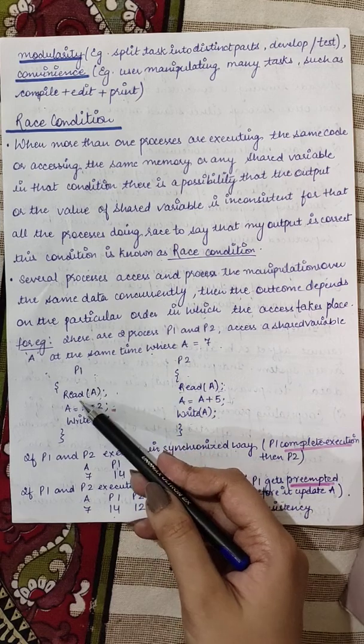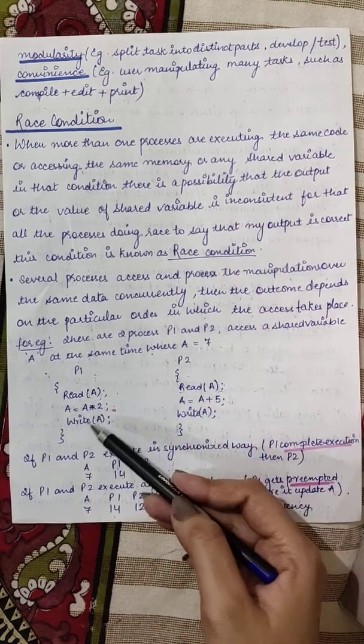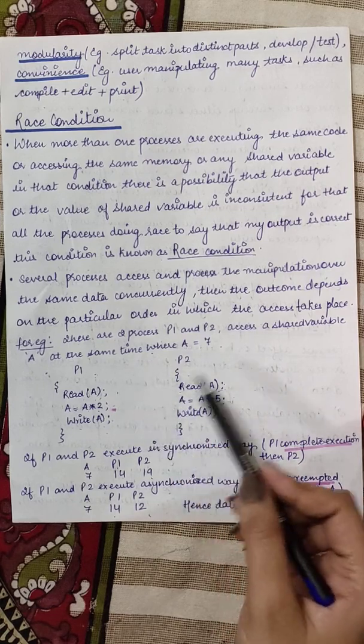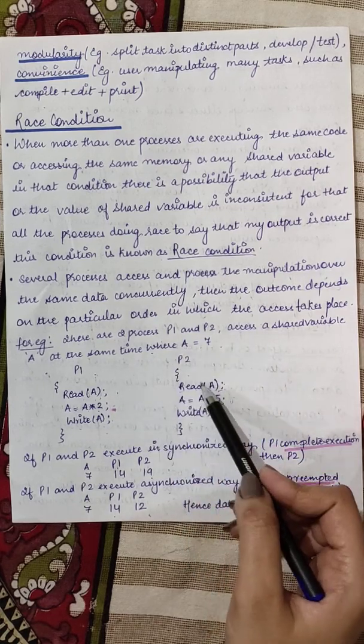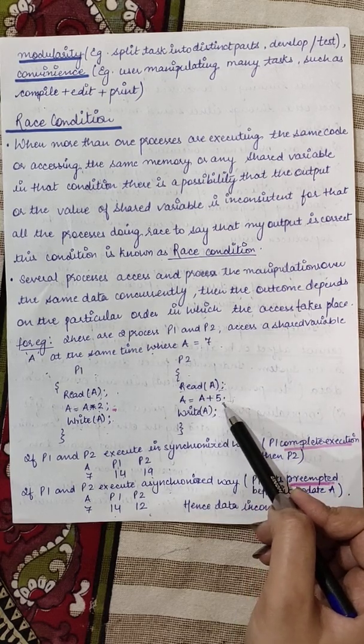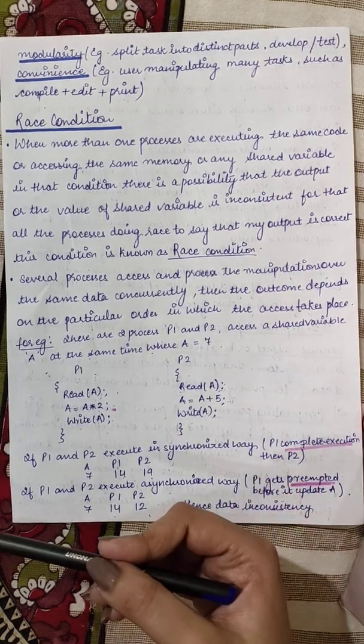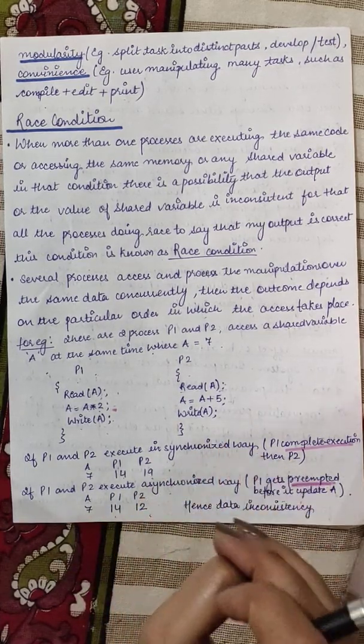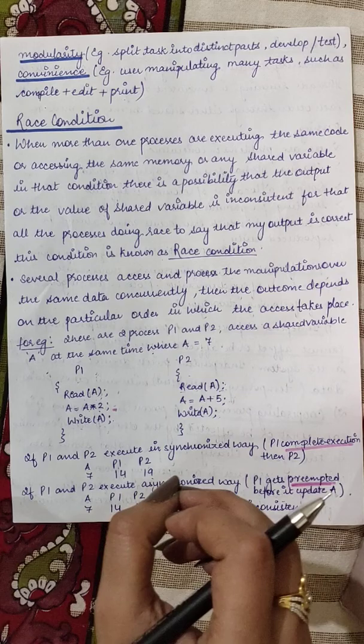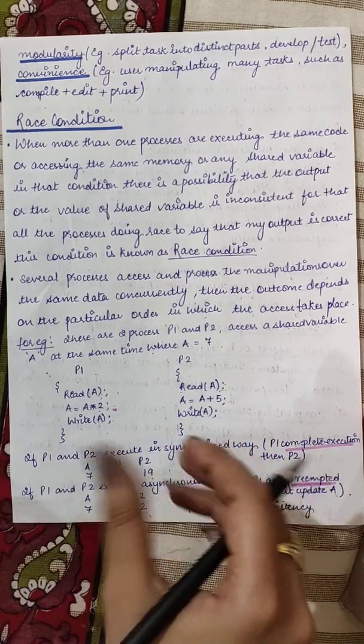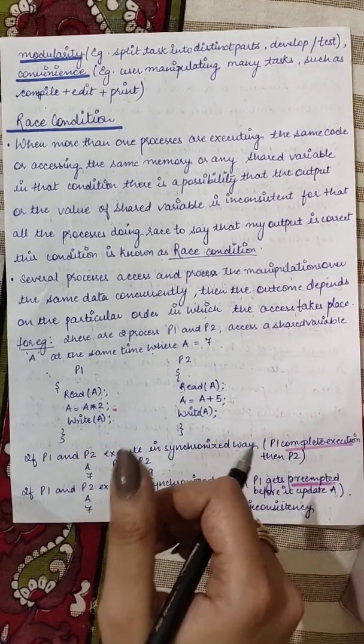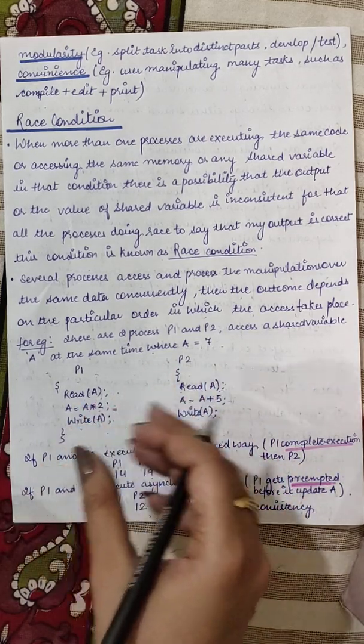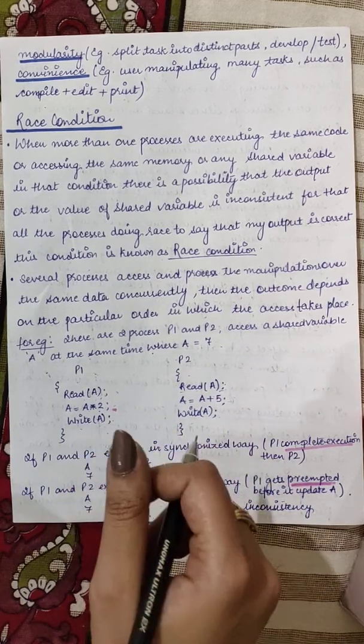To hume koi dikkat nahi hogi. Thik hai kya hua - P1 ne pahle read karaya jaise first example ko solve kiya hua hai. P1 ne read karaya, value of a is 7, 7 into 2 = 14 and usse update kera de. Ab a ki value kitni hai? 14. P2 baad mein aata hai, a ki value ko read karayega, 14 milegi, 14 plus 5 = 19 ho jayega aur 19 value update kera deta hai. Ab hum yeh dekhte hai ki abhi to yeh sidhe sidhe tarike se chal raha tha, koi chhedchaad nahi kar rahi. Hamne bhi P1 ko poora execute kiya hai phir P2 ko chala hai, phir P1 chalata hai, phir P2 chalata hai. Yeh to synchronized tarika hai.